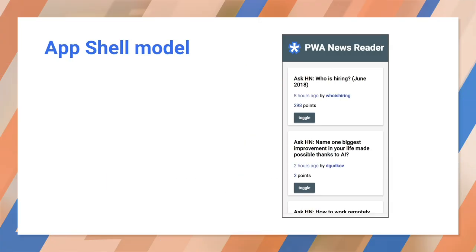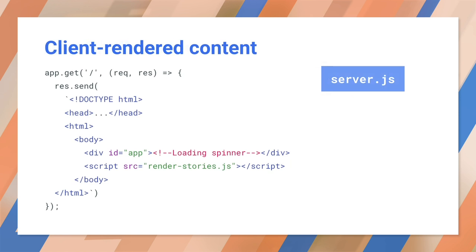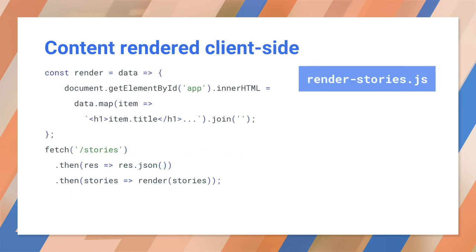Well, remember the App Shell model. The idea is to cache the core resources required for most of your site. Let's look at a simple example. In response to a request for the home page, the server just returns an app div that will be populated with content on the client side by the render stories script. The render stories script fetches content from another route in the example server or a third-party API, and then renders that content in the app div in the HTML shell.